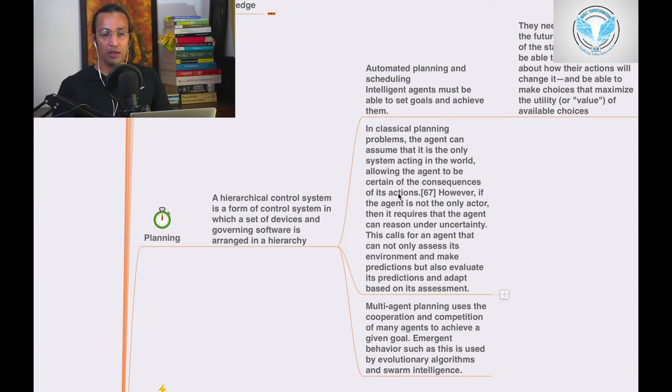A hierarchical control system is a form of control system in which a set of devices and governing software is arranged in a hierarchy - the devices and the software are arranged in a hierarchy. That's planning in AI.